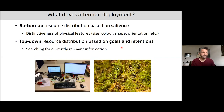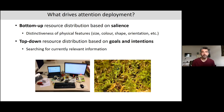Another factor is top-down attention allocation, where we spend our attention resources based on our goals and intentions. For example, if you're looking for your keys on your desk, you need some kind of template to look for a specific combination of features. Search can also be very difficult, like looking for a camouflaged frog — the opposite of popping out — where you need to know exactly how your frog looks to find it in that environment.